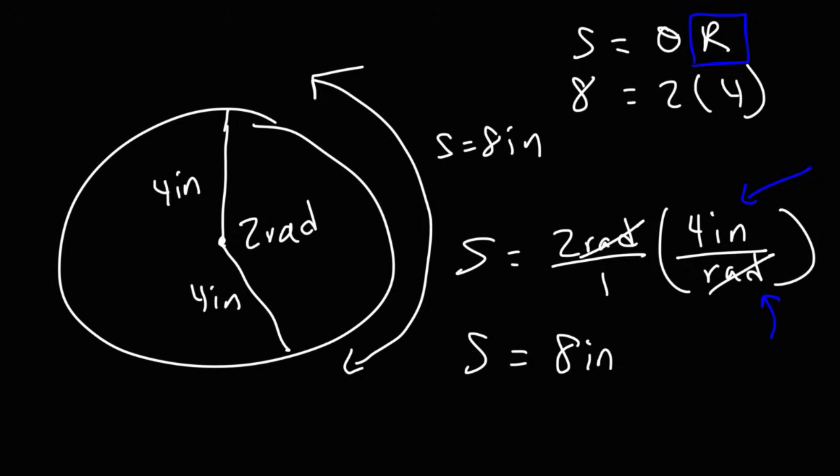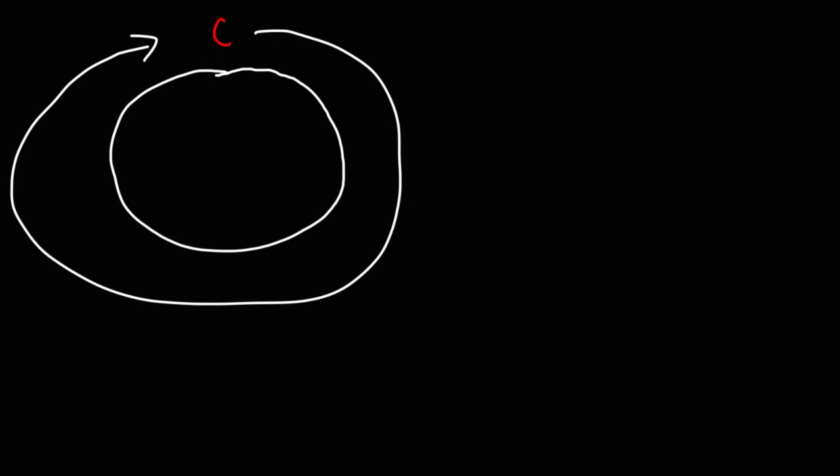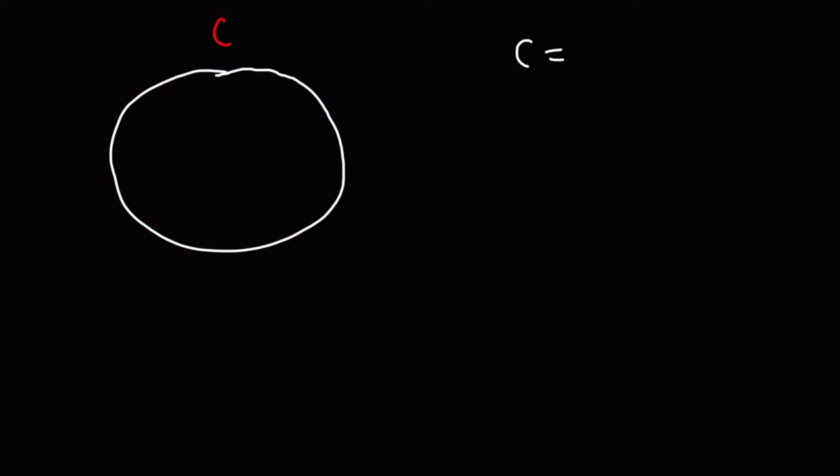Now let's answer another question that relates to radians: how many radians are in a circle? So let's draw a circle. The circumference of a circle is basically the distance around a circle — that distance highlighted in red. So that is the circumference of a circle. The circumference of a circle is equal to 2 pi times R.